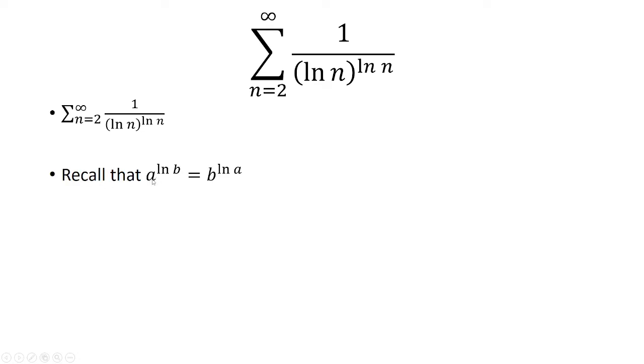First, recall that whenever we have a raised to the natural log of b, that's the same thing as b raised to the natural log of a. So in this case, we're going to say a is the natural log of n, and b is going to be n.